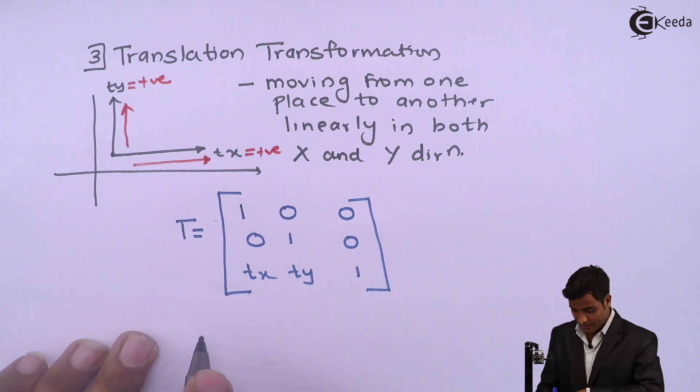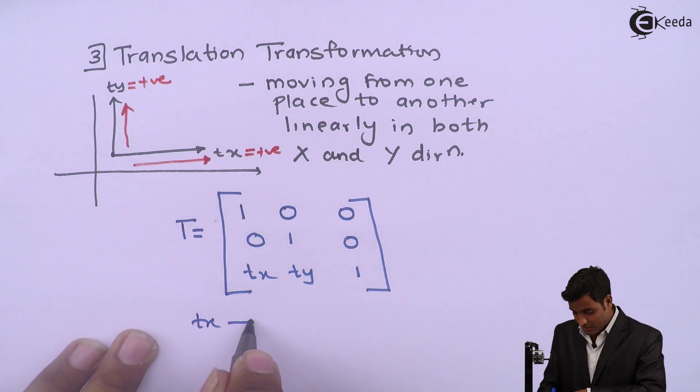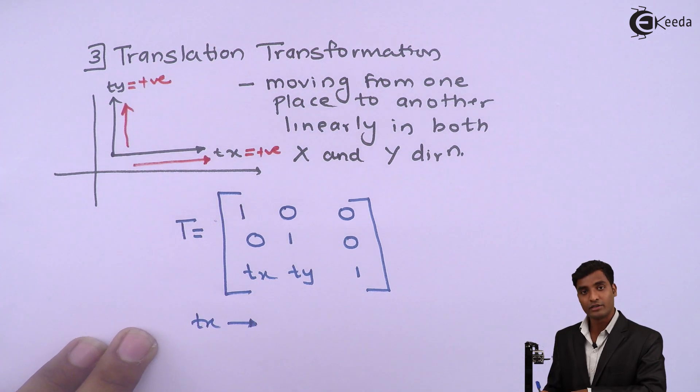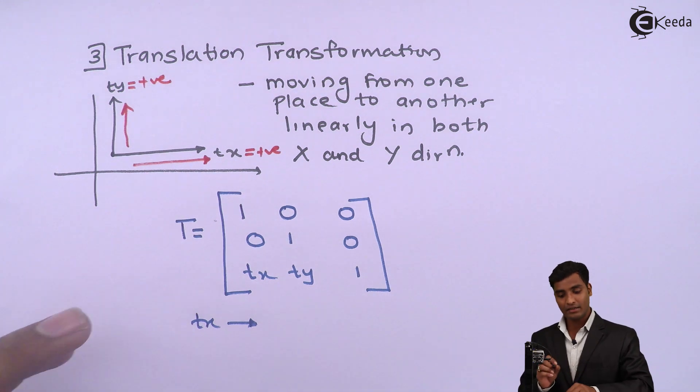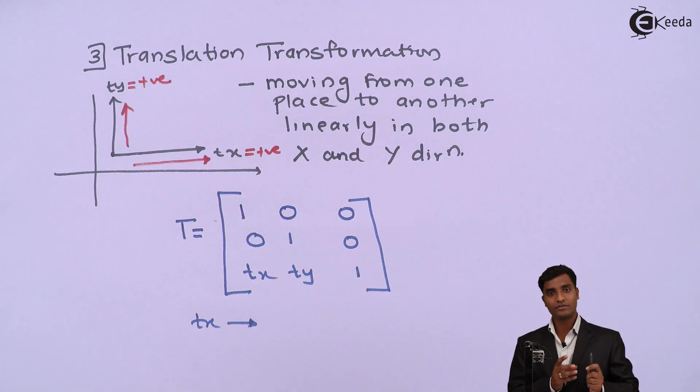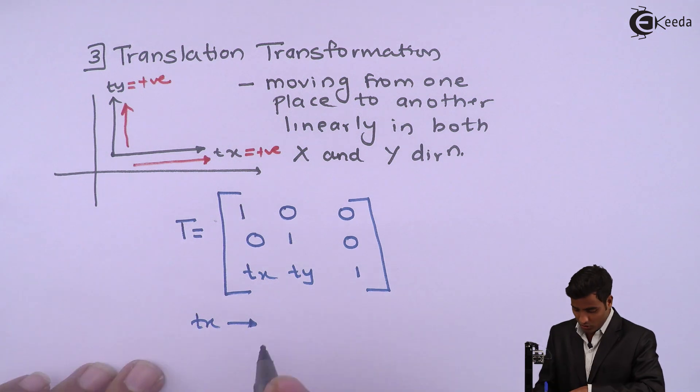Now the comment is that Tx is having some unit because we are translating in some direction means which we have some unit. So it has unit.